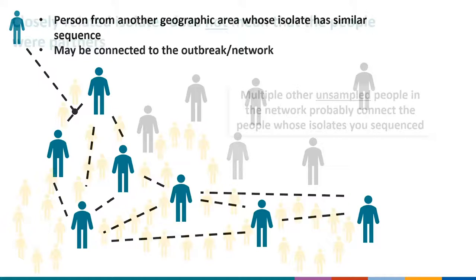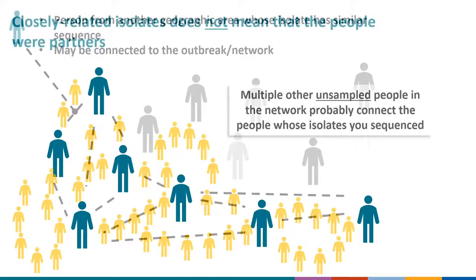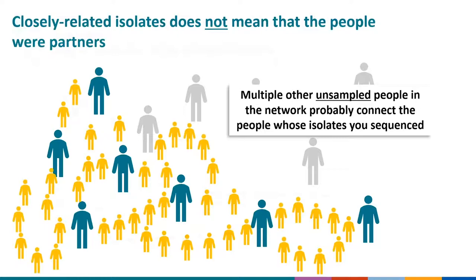It is important to remember that we can't say who infected whom. Closely related isolates do not mean the persons from whom specimens were collected were partners of each other. Especially with limited sampling like we have in gonorrhea, there are likely multiple unsampled individuals in the sexual network — demonstrated here by the yellow icons — that actually connect the people from whom we have specimens. But we can infer that those with closely related isolates are likely connected somehow within a sexual network.